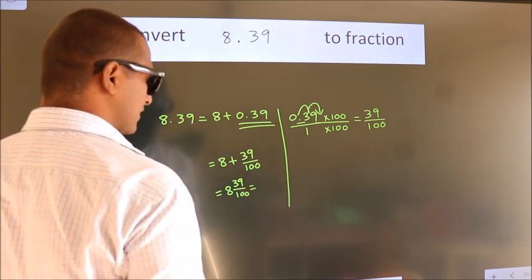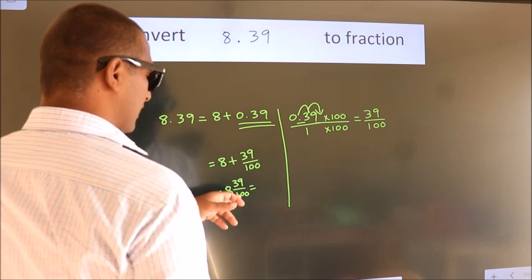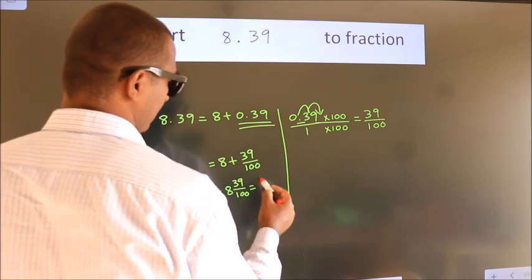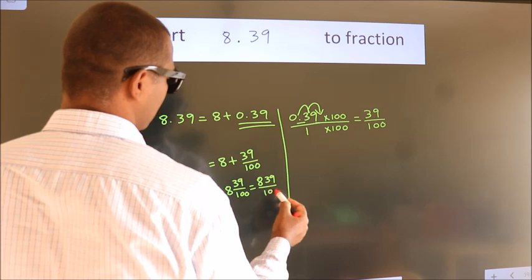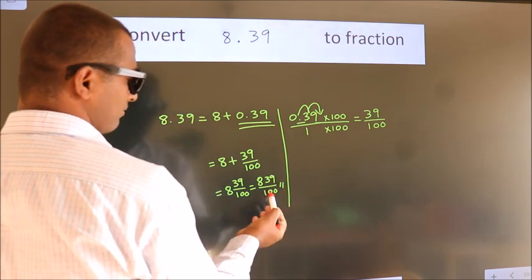And in improper fraction, it is 8 into 100, 800 plus 39, which is 839 by 100. This is our fraction.